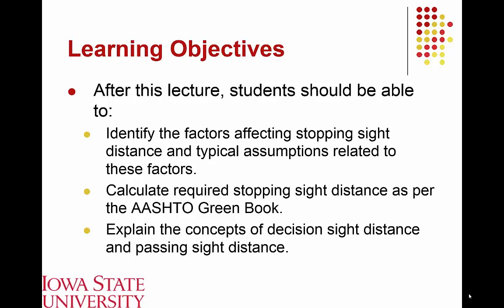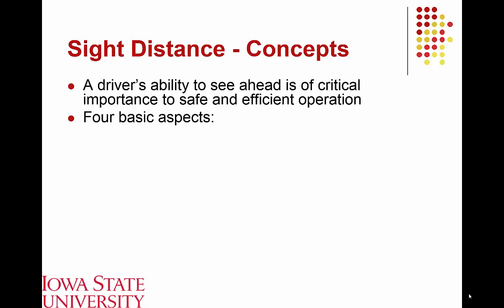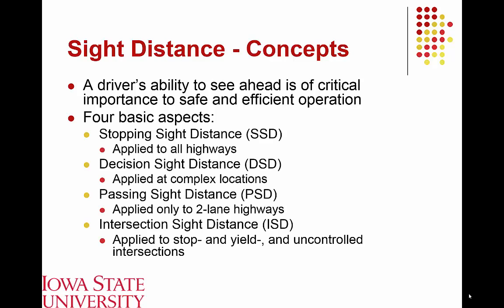Sight distance in general is the driver's ability to see ahead, which is critical to safe and efficient highway operations. There are four primary types of sight distances encountered in geometric design: stopping sight distance, decision sight distance, passing sight distance, and intersection sight distance.